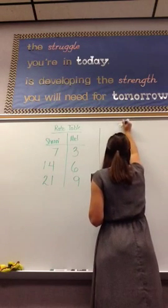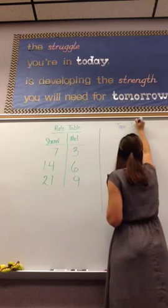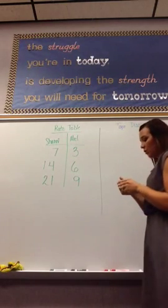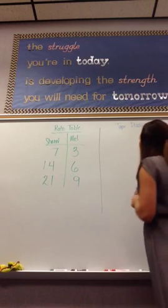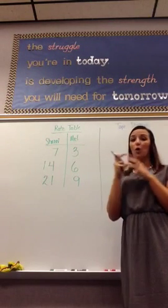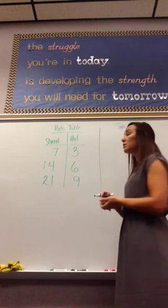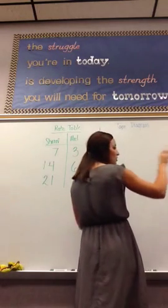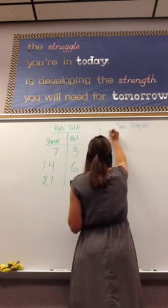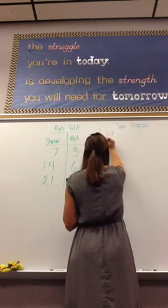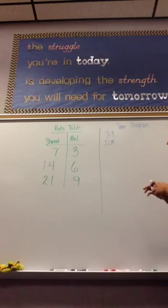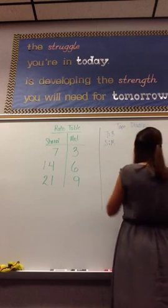A tape diagram is another problem-solving strategy, and one that you may have used before in earlier grades. A tape diagram is kind of a fancy word for a rectangle with equal parts. We need to go back to our word problem, and we know the ratio is seven to three for Shani to Mel. So, I am going to create a rectangle with seven equal parts for Shani.